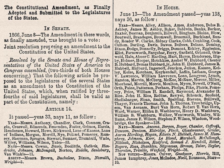Section 4. The validity of the public debt of the United States, authorized by law, including debts incurred for payment of pensions and bounties for services in suppressing insurrection or rebellion, shall not be questioned. But neither the United States nor any state shall assume or pay any debt or obligation incurred in aid of insurrection or rebellion against the United States, or any claim for the loss or emancipation of any slave, but all such debts, obligations and claims shall be held illegal and void. Section 5. The Congress shall have power to enforce, by appropriate legislation, the provisions of this article.